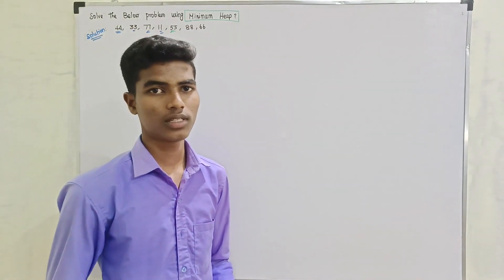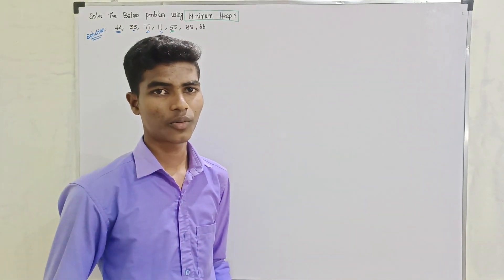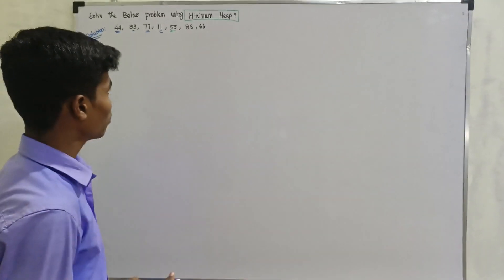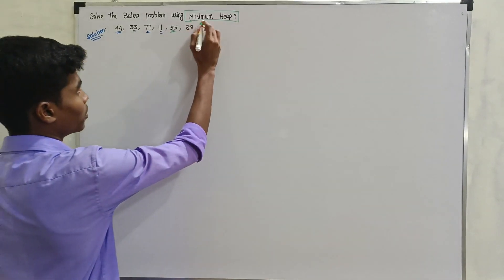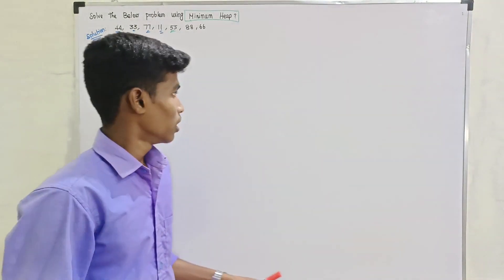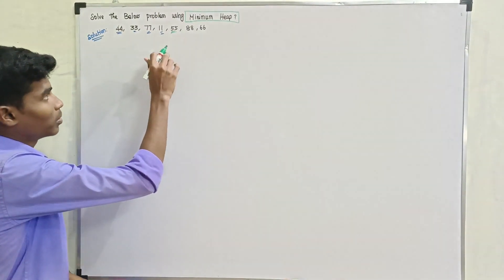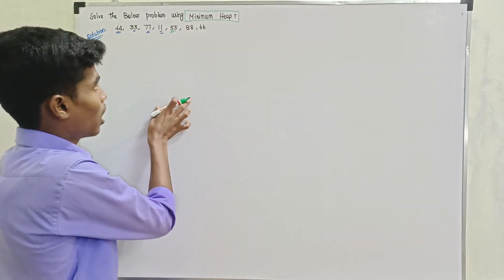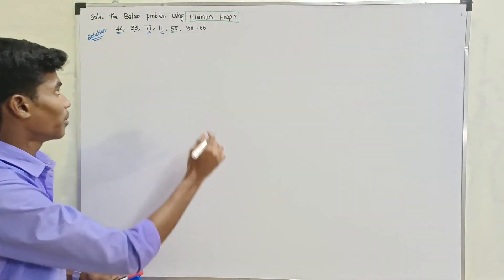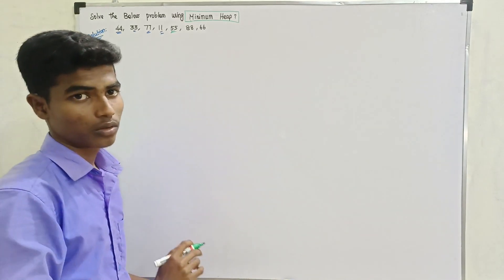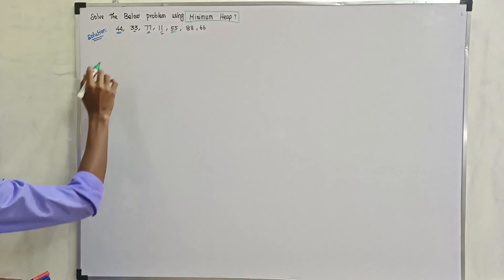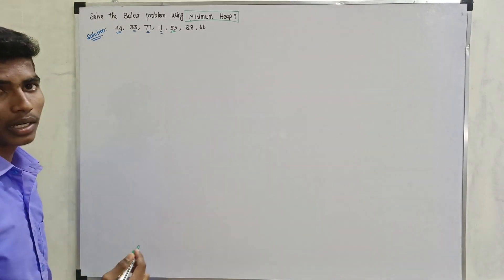Hello friends, welcome to VJ Solution 2.2. If we look at the topic, we will see the minimum here. How to find minimum here? If we look at the problem here, we will need to understand better.